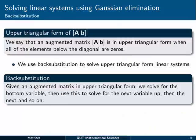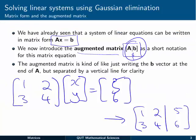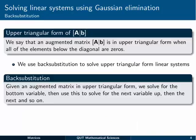A couple of definitions. Upper triangular form: the augmented matrix AB is in upper triangular form when all of the elements below the main diagonal are zeros. Going back to that example, the main diagonal would be the 1 and 4 elements. This is not in upper triangular form because we've got a 3 there below the diagonal. If we changed that to a zero, then we'd have an upper triangular form augmented matrix. We use back substitution to solve upper triangular systems.